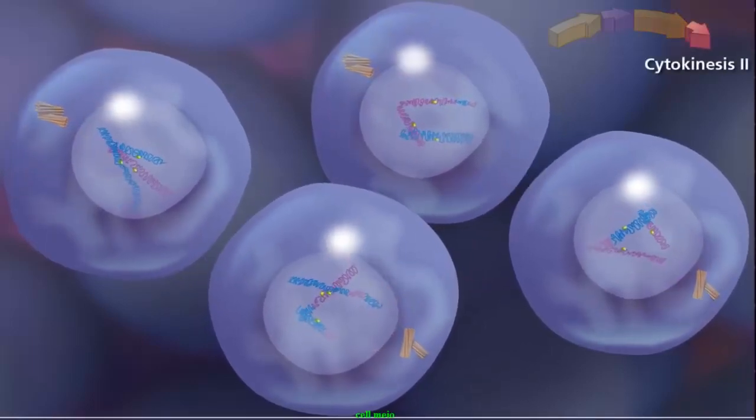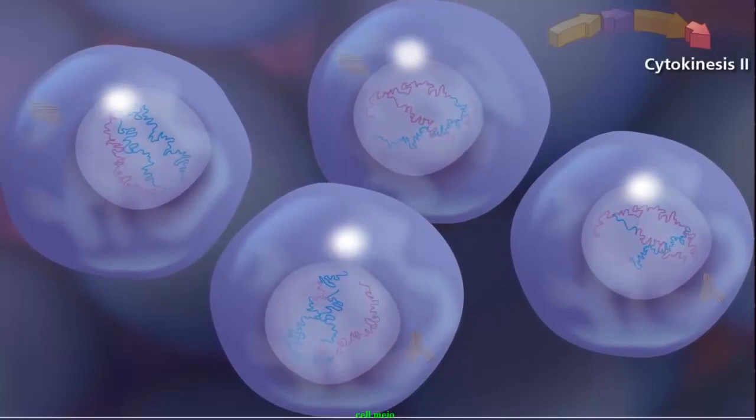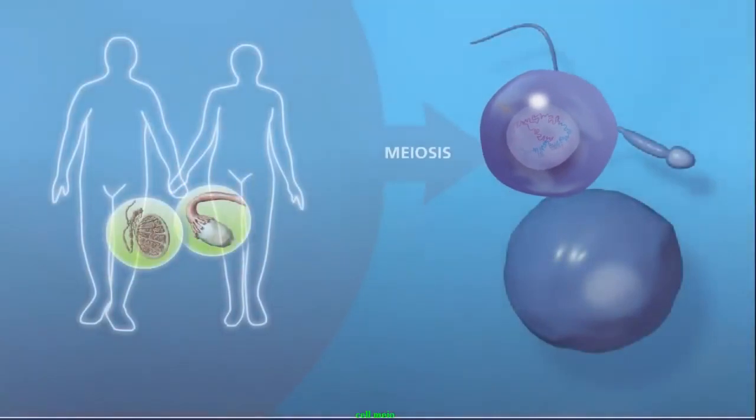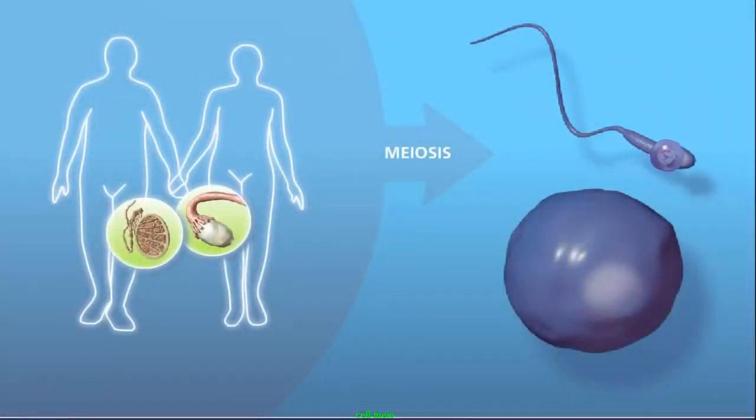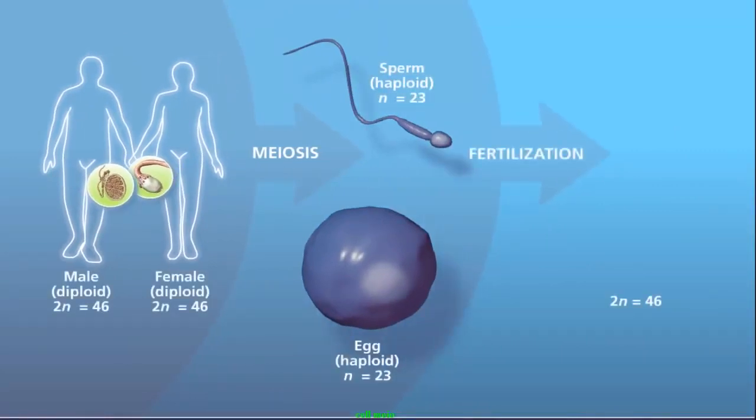The entire process ends with telophase II, as the chromosomes decondense and the nuclear envelope reforms. Cytokinesis occurs and cleavage furrows separate the two daughter cells into four haploid daughter cells. The haploid daughter cells will specialize into gametes, either sperm or egg. These fuse in fertilization to form a zygote, which will grow into a child. The child receives half its chromosomes from its mother and half from its father.